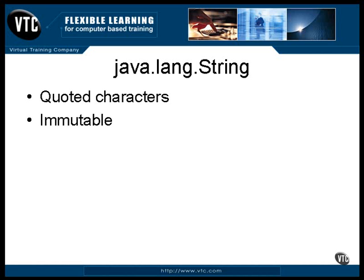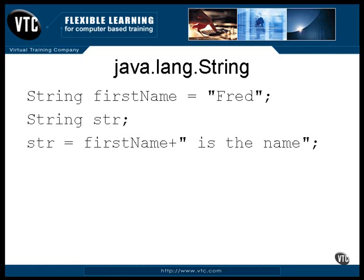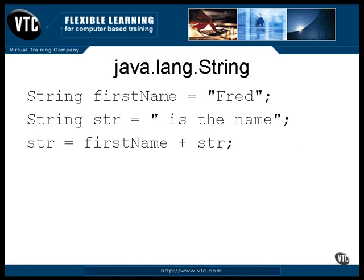For example, string concatenation just creates a new string object. Look at this code. The string reference firstName is constructed and holds the characters F-R-E-D. The second reference is created and holds nothing. In the third line of code, a new string object is created by the plus sign, made up of the contents of the first string and the new string created from the quoted line. The address of this new string is then stored in the reference. Here's some code that does the same thing in a different way — it works exactly the same. The plus sign creates a new string object and the address of that object is stored in the reference. The original string in the STR reference is released to the garbage collector.